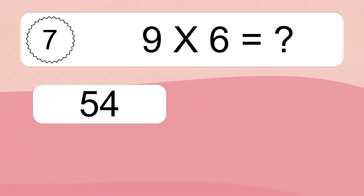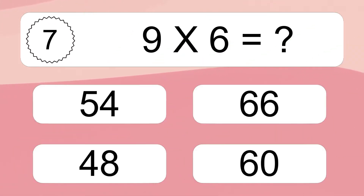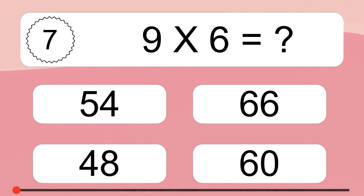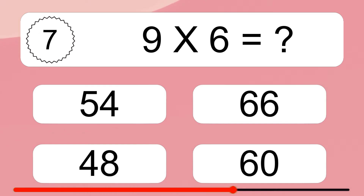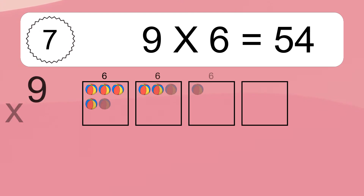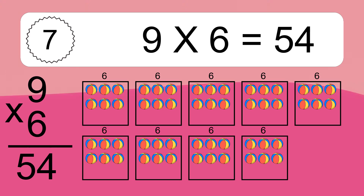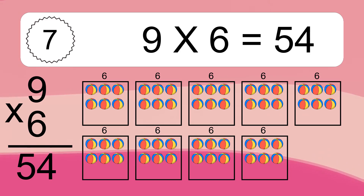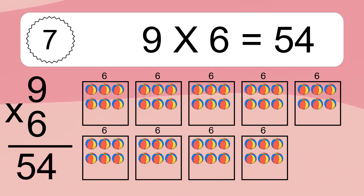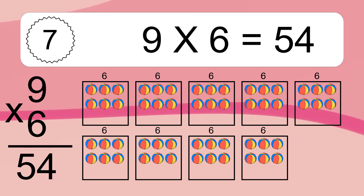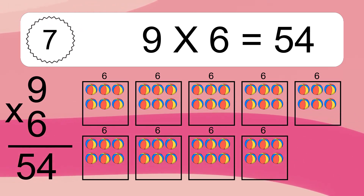9 times 6 equals what? 9 times 6 equals 54. We have 9 boxes, and each box has 6 colorful balls inside. If you count all the balls in all the boxes together, you will have 9 times 6 balls. This equals 54 balls.